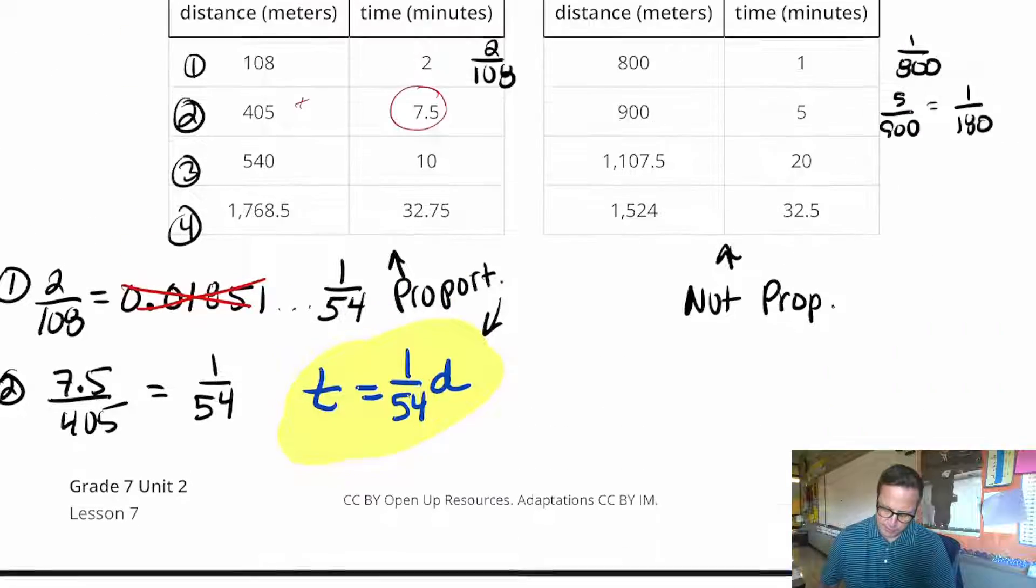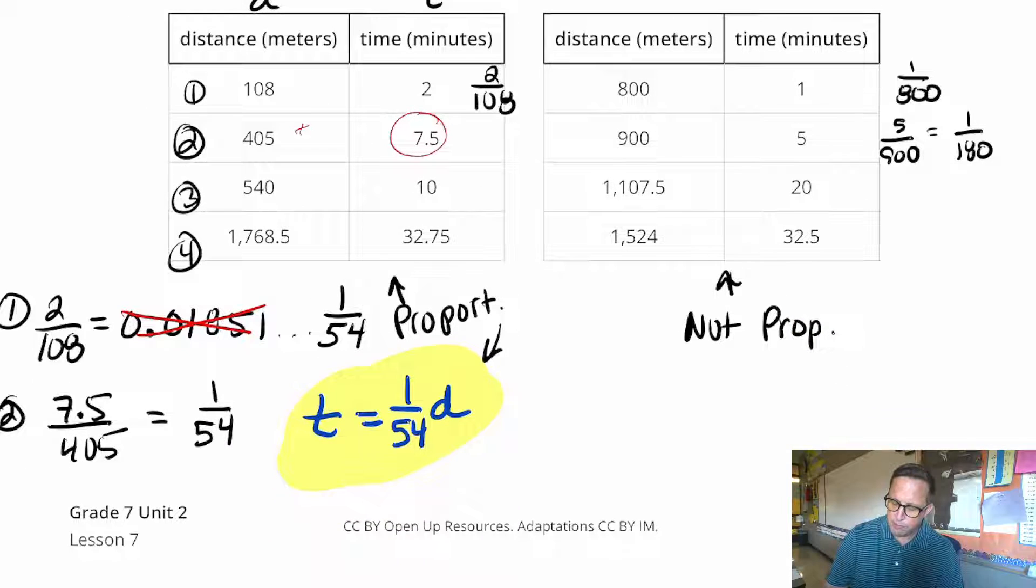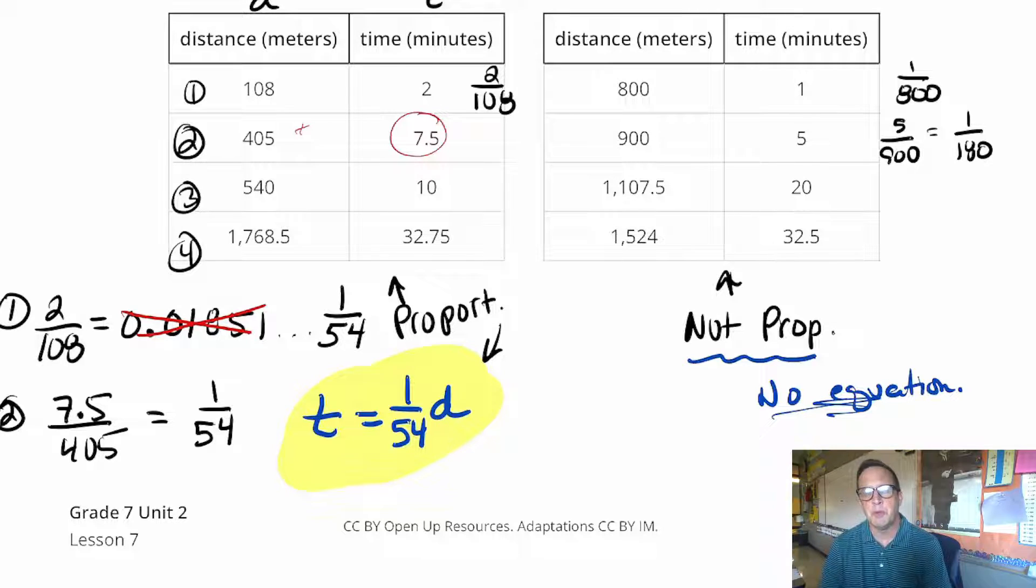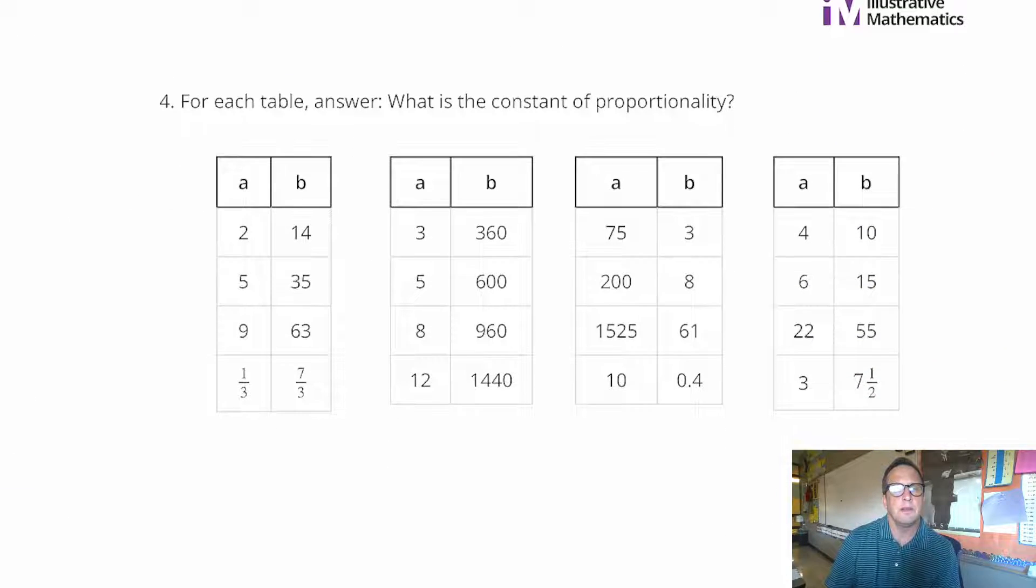Moving on here. Let me make sure I didn't miss anything on that one. And I should also state this, that since it's not proportional, there's no equation. At least, I mean, we could probably write an equation using what we know about linear equations. But again, you're not at that part yet.